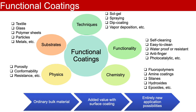Let's start with functional coatings. Functional coatings are typically performed on a material surface to provide extra properties and characteristics. The coating is normally formed on the surface of material in the thickness ranging from nanometer to micrometer. Functional coatings can be applied to different substrates including textile, glass, polymer sheets, particles and metals using various techniques such as sol-gel, spraying, dip coating and vapor deposition.